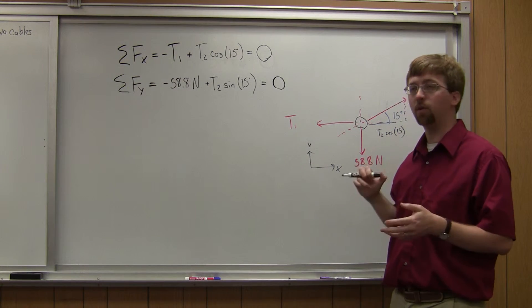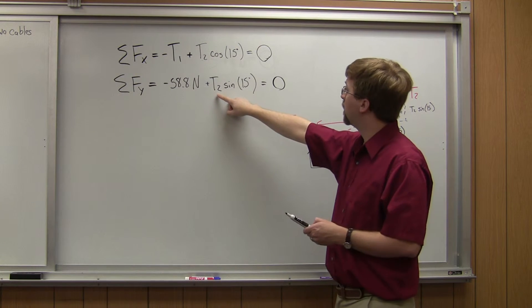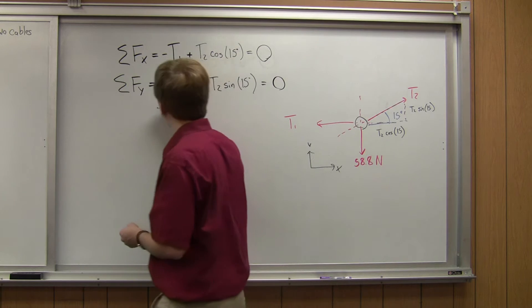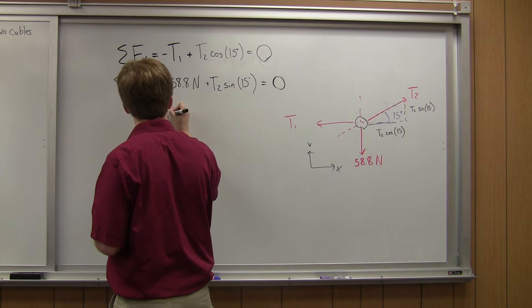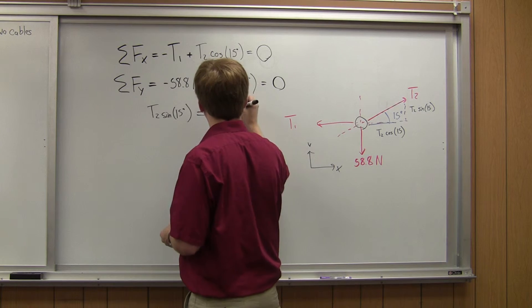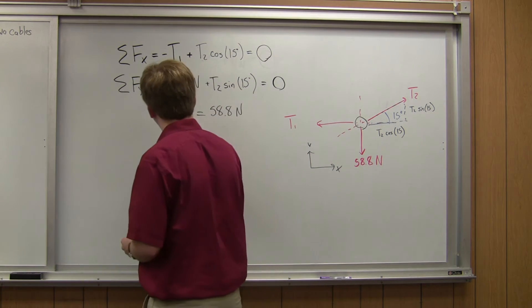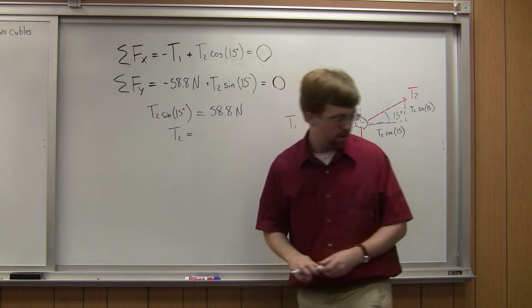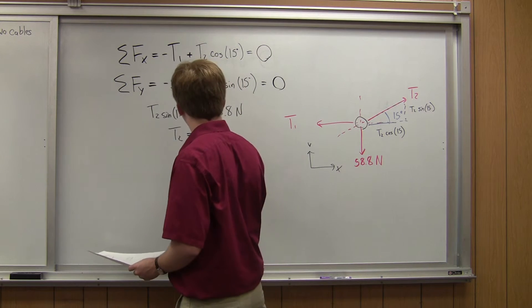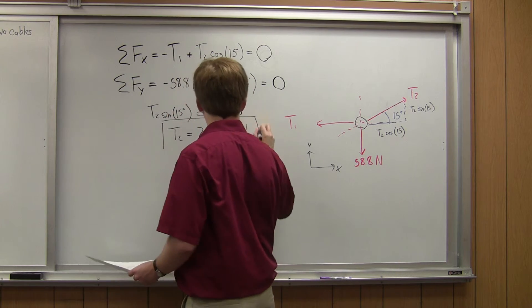So from here, I've got two options. I need to solve for T1 and T2. That's my unknowns. And the smartest thing to do, since I've got only one unknown in this equation, I'm going to solve for T2 first. So if I rearrange this, I can get T2 times the sine of 15 degrees is going to be equal to 58.8 newtons. I divide both sides by sine of 15. And I can get the answer for T2. T2 is going to be equal to 227.2.